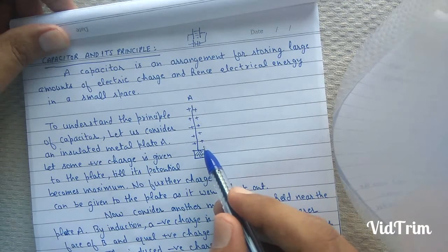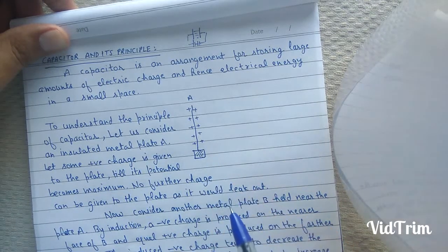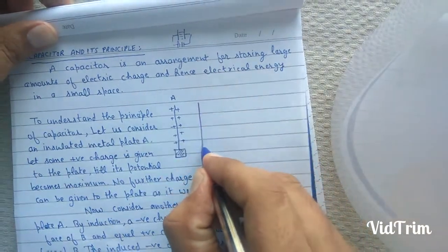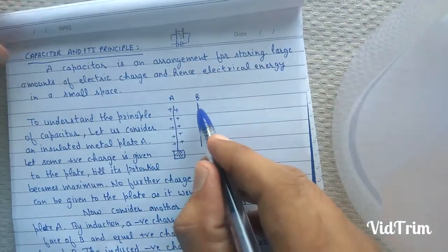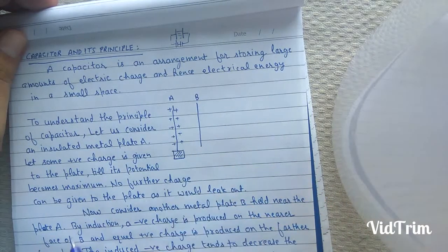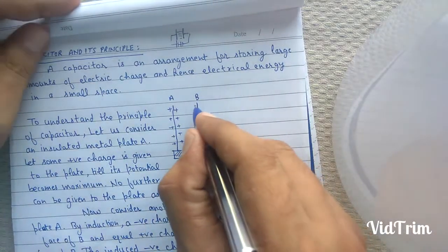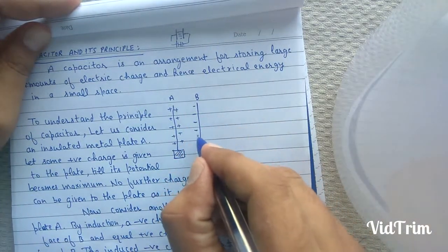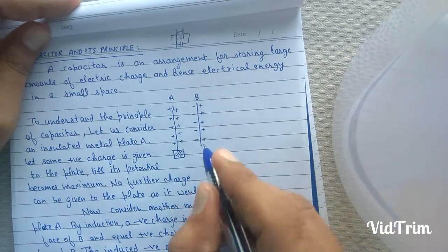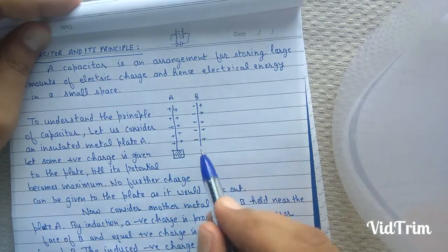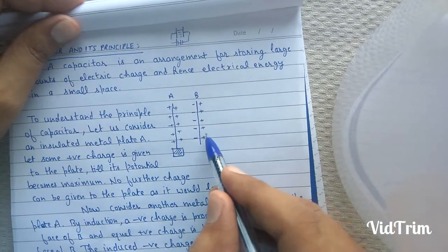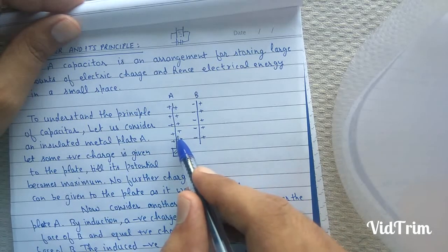No further charge can be given to plate A as it would leak out. Now consider another uncharged insulated metal plate B brought near A. By induction, a negative charge is induced on the near face of plate B and an equal positive charge is induced on the further face of plate B. This induced negative charge tends to reduce the potential of A and the induced positive charge tends to increase the potential of plate A.